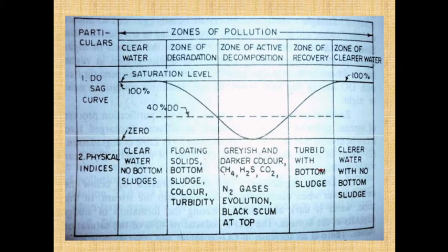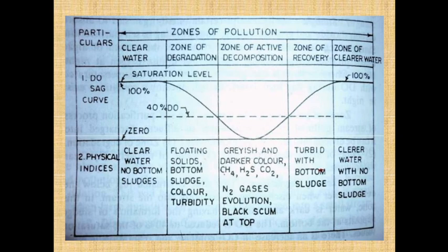Now discussing in detail what exactly happens in each zone of pollution along the river stream: the clear water zone has clear water with no bottom sludge, no color, and 100% DO saturation. The zone of degradation is just below the point of wastewater/sewage/effluent discharge. This zone is dark and turbid, contains bottom sludge, DO reduces to 40% of saturation, CO2 content increases, re-oxygenation occurs but slower than deoxygenation, it is unfavorable for aquatic life, algae die out, and worms and fungi appear.